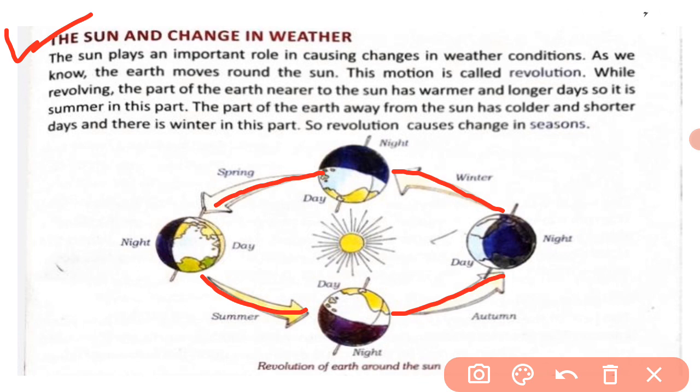While revolving, the part of the earth nearer to the sun has warmer and longer days, so it is summer in this part. Earth ka jo part sun ke nazdeek hota hai, woh part warm hota hai aur wahan days long hote hain — isliye uss part mein summer season hota hai.